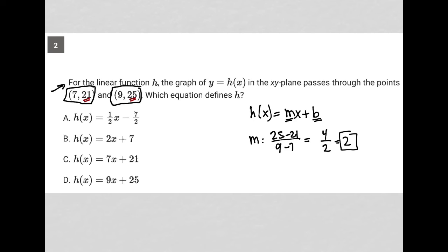Now that's helpful because immediately I can cross out A because we have one half as a slope. I can cross out C because we have 7 as a slope. I can cross out D because we have 9 as a slope. So actually that's all I really needed to find. I figured out that 2 is the slope and choice B is the only answer choice that has 2 as its slope.